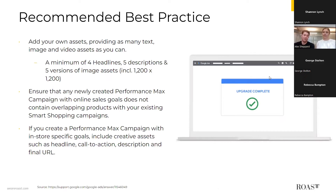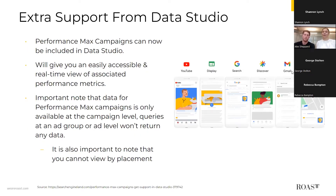For best practices, Google recommends adding as many creative assets as possible, including a wide range of text, video, and image assets, to serve across more eligible inventory and achieve optimal performance — a minimum of four headlines, five descriptions, and five versions of image assets. You should also ensure that newly created Performance Max campaigns with online sale goals do not contain overlapping products with existing Smart Shopping campaigns, to prevent competition between them. For campaigns with in-store specific goals, you must include creative assets such as headline, call to action, description, and final URL.